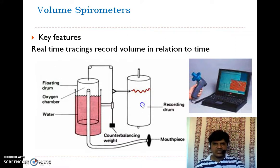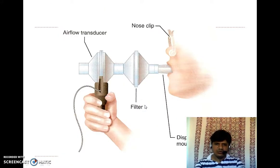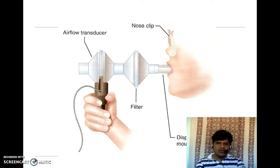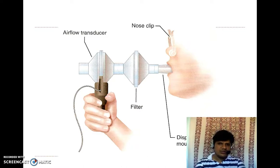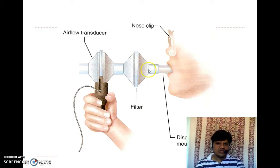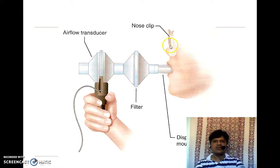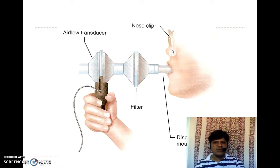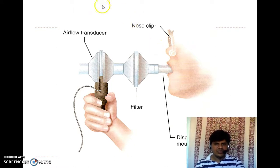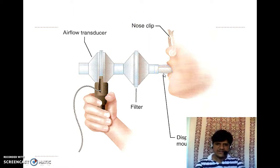This spirogram is compared with a standard. To capture the breathing pattern, there is a disposable mouthpiece connected to a device with a filter that filters the inhaled and exhaled air, and an airflow transducer that detects the flow of air through the mouthpiece. A nose clip blocks nasal breathing entirely, so all breathing is through the mouthpiece only.